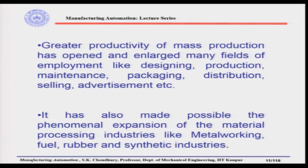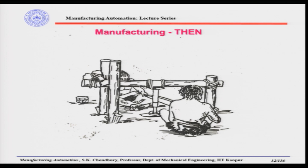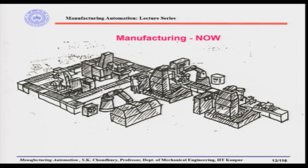Automation has also made possible the phenomenal expansion of material processing industries like metalworking, fuel, rubber, and synthetic industries, which were not there before automation was introduced. We can see the manufacturing of then, where many people worked for very long times making parts, versus manufacturing now, where very few people are involved in production.